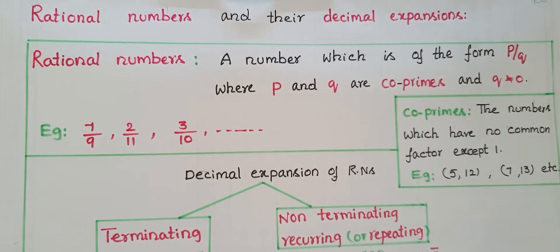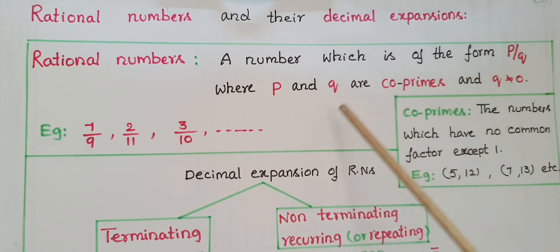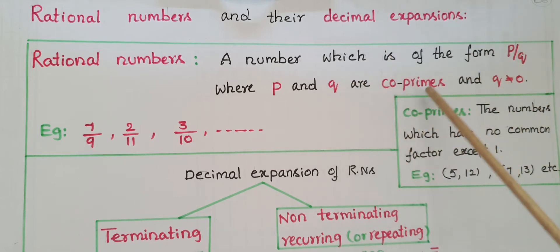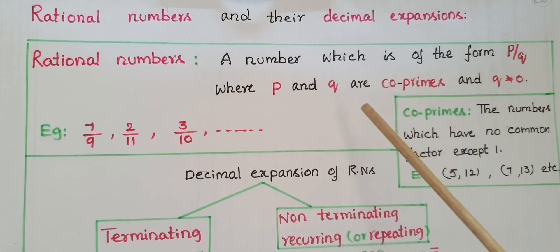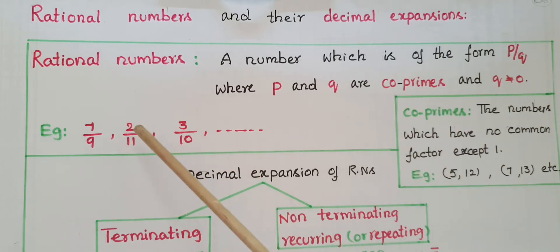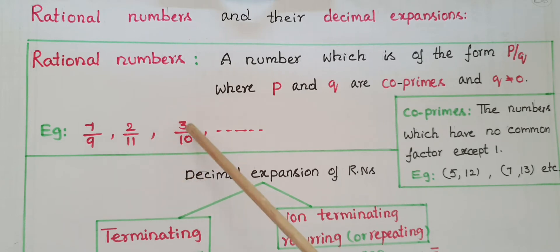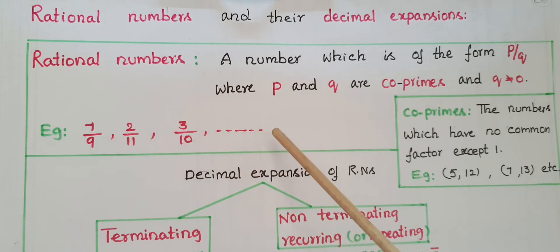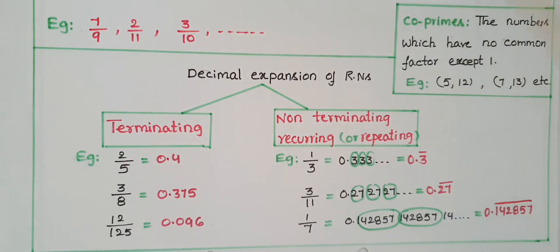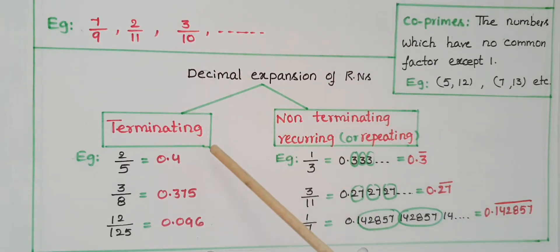Hello everyone. Today I am going to tell about rational numbers and their decimal expansions. We know that a number which is of the form p by q, where p and q are co-primes and q is not equal to zero, is called a rational number. For example, seven by nine, two by eleven, three by ten — these types of numbers are called rational numbers. The decimal expansion of rational numbers are either terminating or non-terminating recurring or repeating.